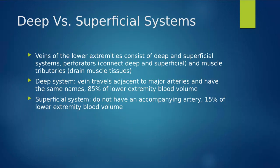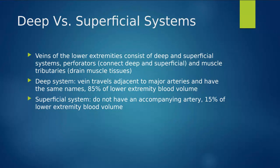Our deep and superficial systems — we really only care about the deep system. The reason is that it carries 85% of the blood flow in our legs; only 15% travels from the superficial system. Unfortunately, we don't care too much about the superficial system even if there's a clot in it, because the likelihood of that clot traveling in a superficial vein is unlikely due to less blood flow. We really focus on the deep system veins for a thorough evaluation.